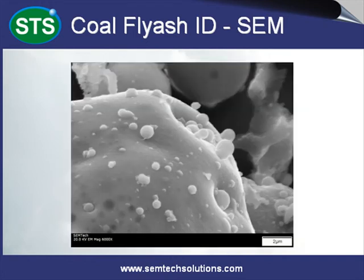SEM imaging of coal fly ash exhibits symmetrical smooth round spheres, sometimes with spindle or dendritic features. Oftentimes, large fragmented spheres consist of numerous smaller spheres, as shown here.